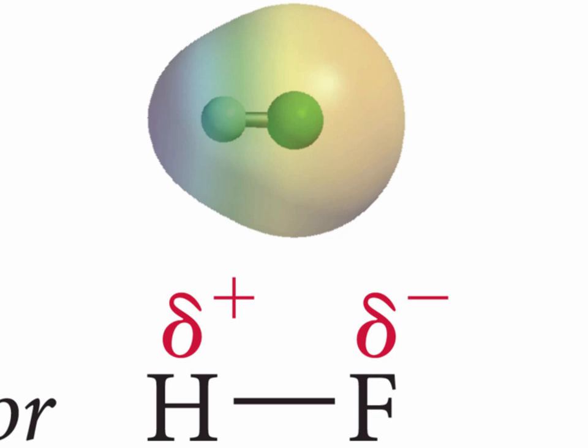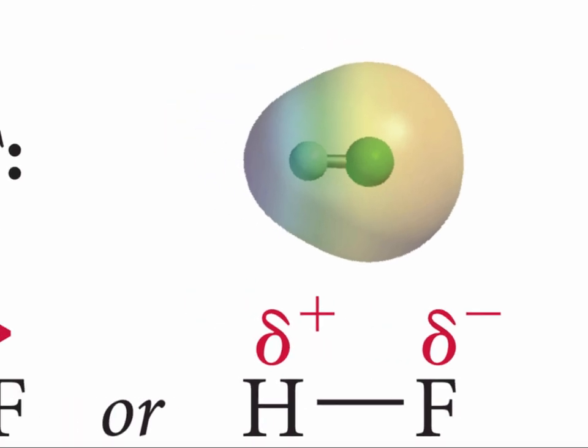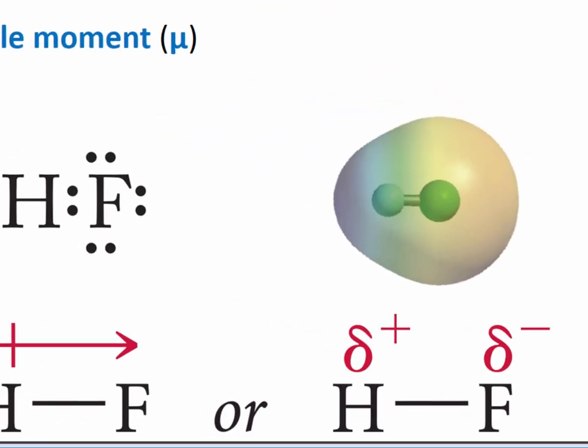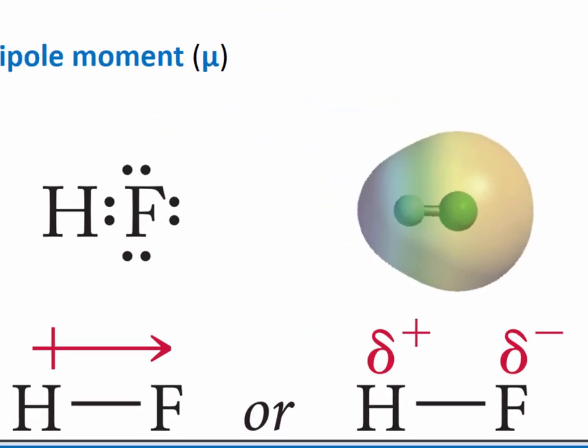This sets up a partial negative charge on fluorine, which is indicated using a delta negative, and a partial positive charge on hydrogen, which is indicated using a delta positive. We can also represent the separation of charge using an arrow pointing from the partial positive charge to the partial negative charge. The tail of the arrow has a plus sign and the head points to the partial negative.